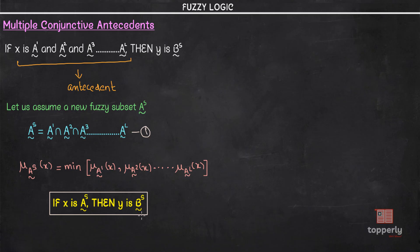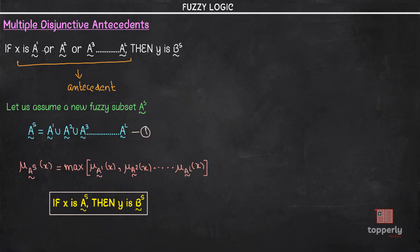Similarly, we can do it for multiple disjunctive antecedents. The case of multiple disjunctive antecedents is exactly similar to multiple conjunctive antecedents. The only difference is that instead of the AND operator we use the OR operator, because the disjunctive operator OR and union all perform the same function. Here we have: if x is A1 OR A2 OR A3 up to Al, then y (our output) is Bs. Again, A1, A2, A3, Al, and Bs are all fuzzy sets or fuzzy numbers.